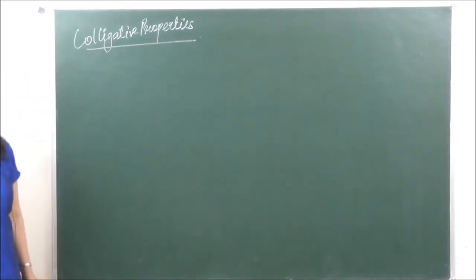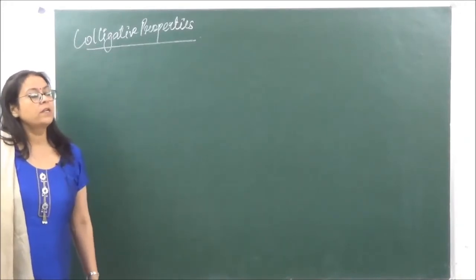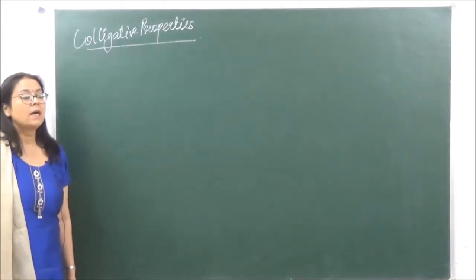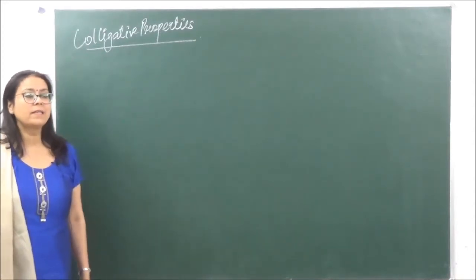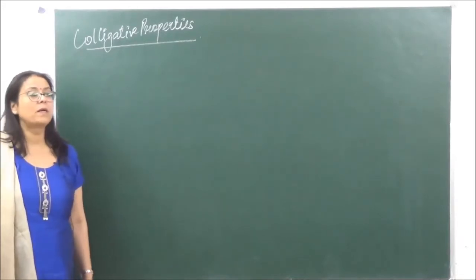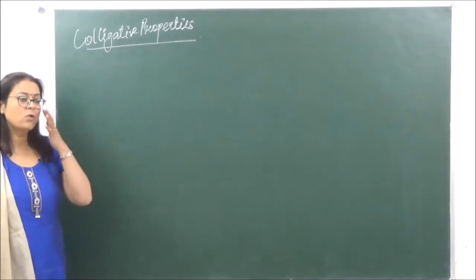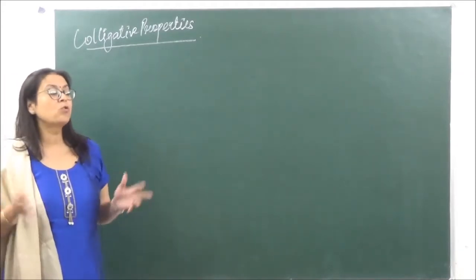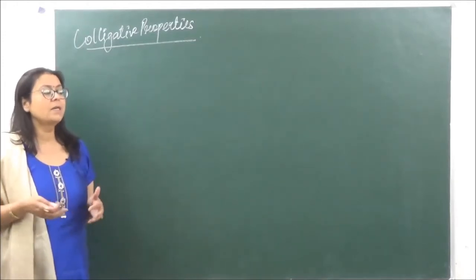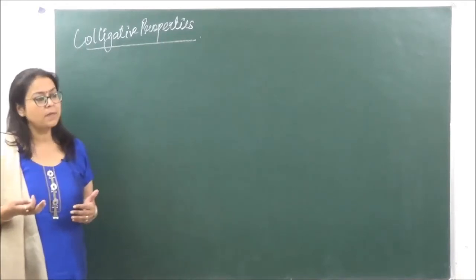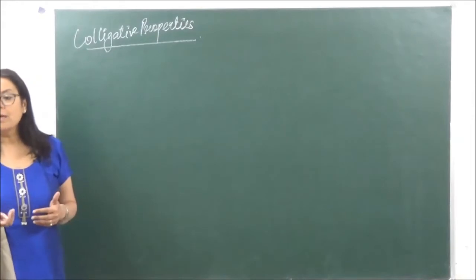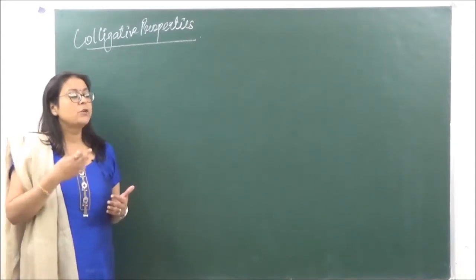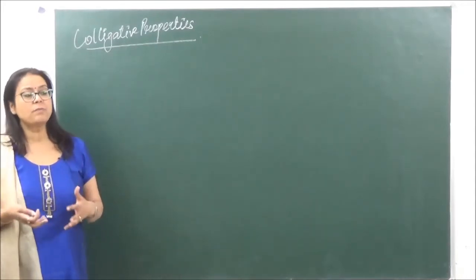We started with our next topic today: colligative properties. We are going to discuss three colligative properties — we have already discussed one when we did Raoult's Law. When we make a solution, within a solvent there are non-volatile solute particles dissolving in the homogeneous mixture. These solute particles interfere with and obstruct certain solvent properties, such as vapor pressure.